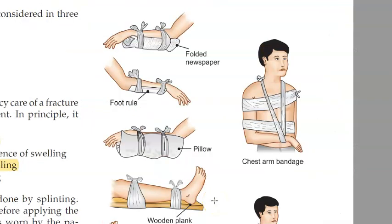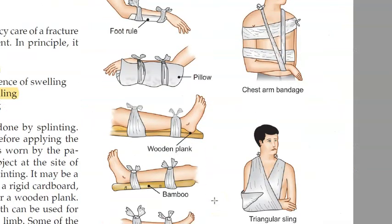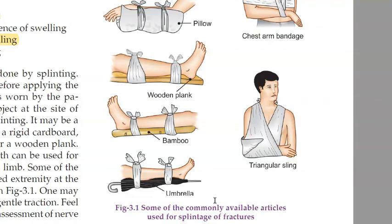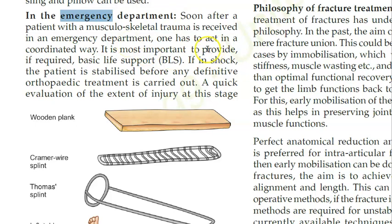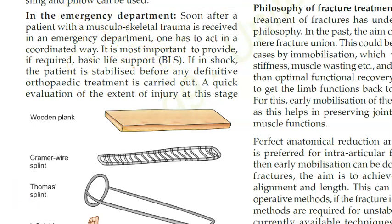Various splints can be used in emergency — folded newspaper, bamboo, umbrella. In the emergency department, always take care of hemorrhage first, then airway, breathing, and circulation, which is part of basic life support.